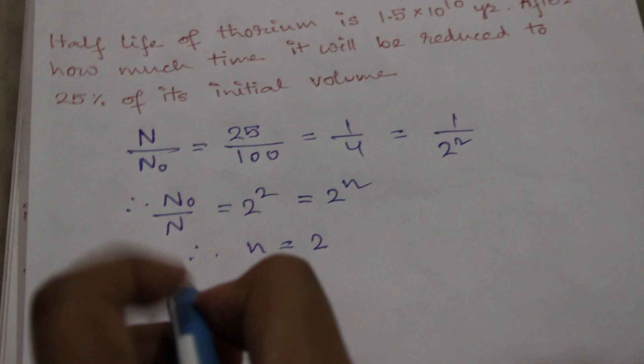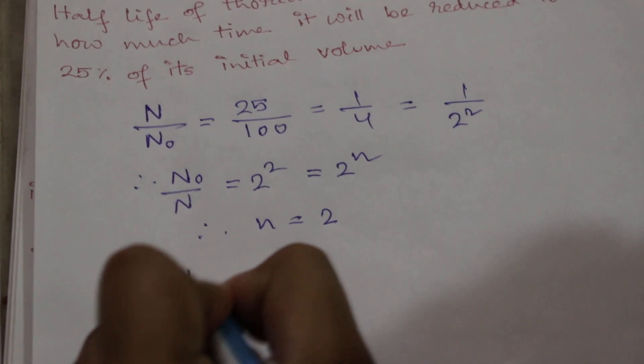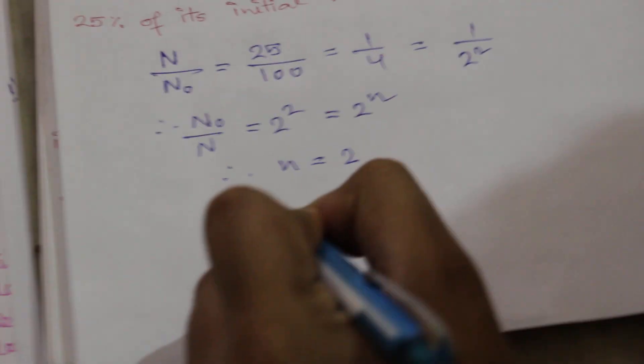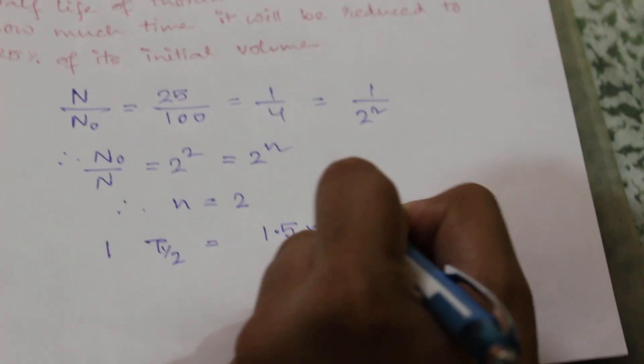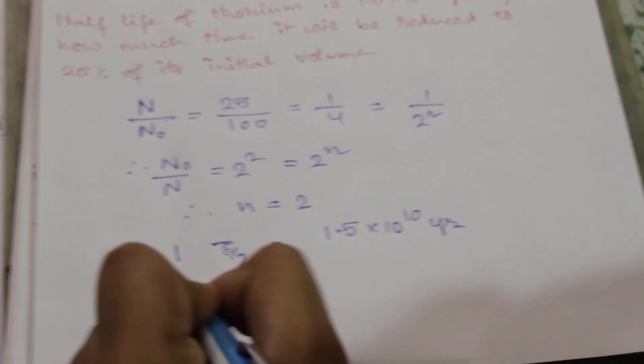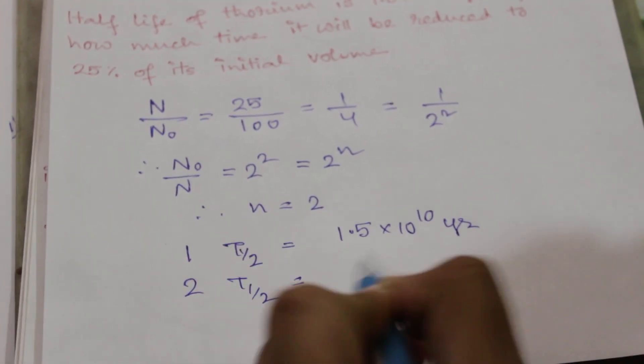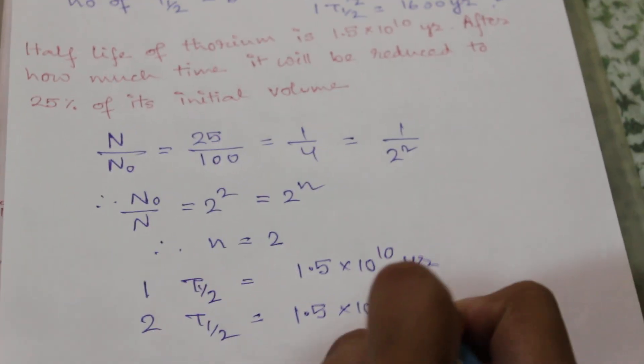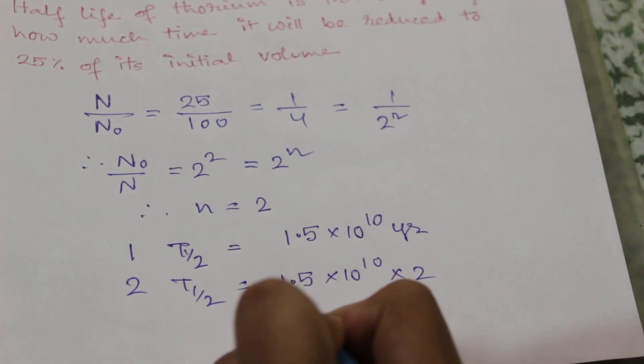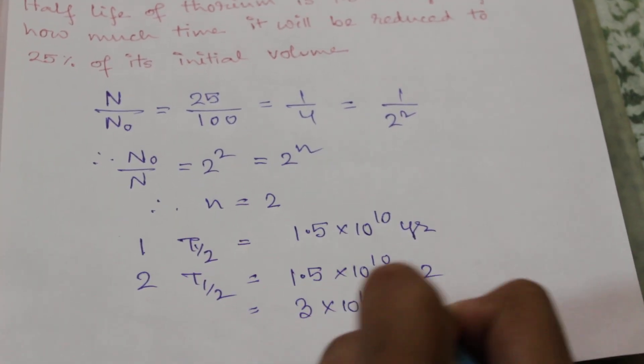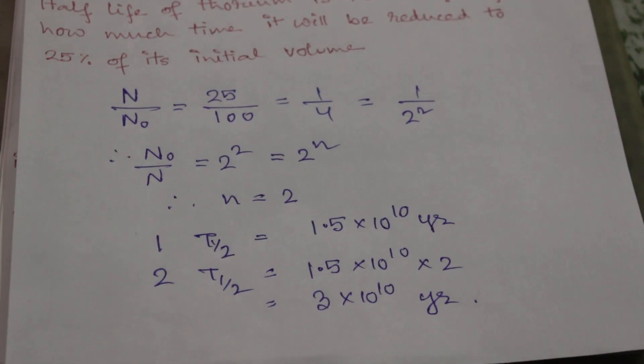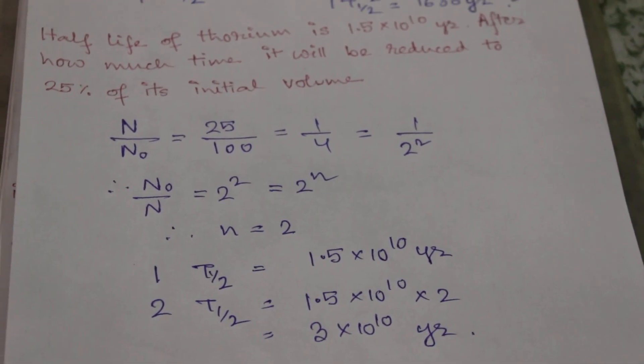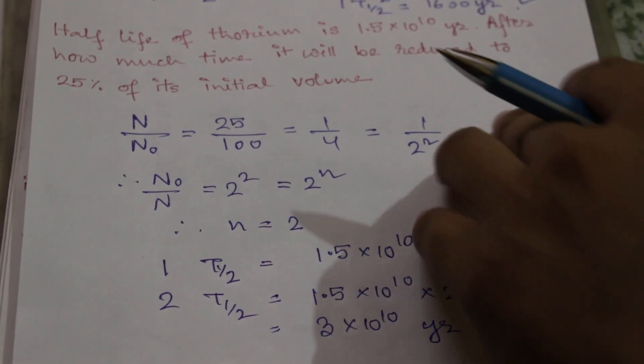Now one half-life is 1.5 times 10 to the power 10 years, so 2 half-lives is 1.5 times 10 to the power 10 times 2 years, that will be equal to 3 times 10 to the power 10 years. So it will take 3 times 10 to the power 10 years to be reduced to 25 percent of its initial volume.